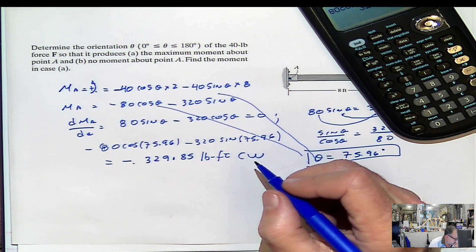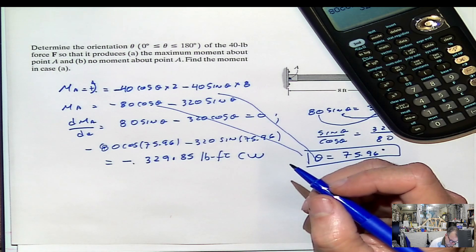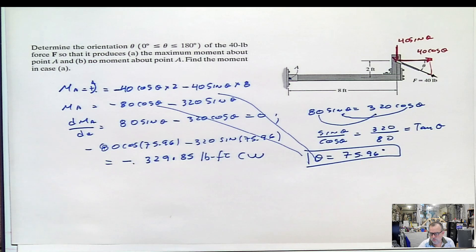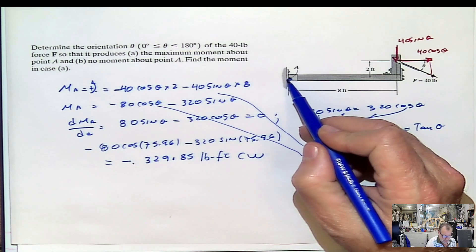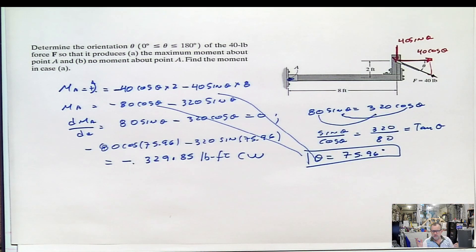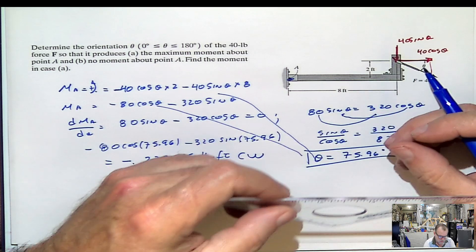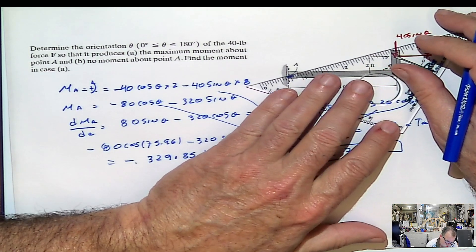Now, the second question is simpler, in my mind, if you know what to do. Everything is simpler when you know what to do, right? For not producing moment at A, I can go with any elaborate thing that you can imagine. But I know that that force is not going to produce any moment when the line of action of the force passes through the point A.